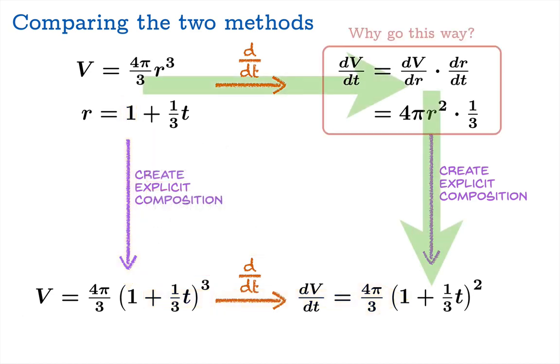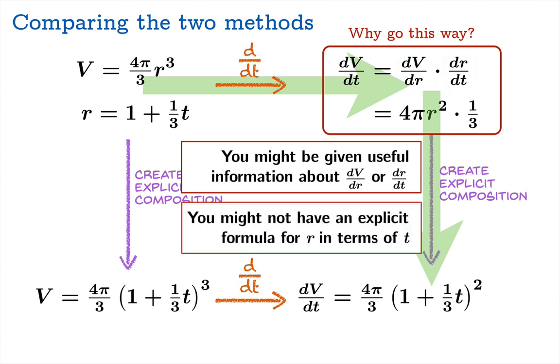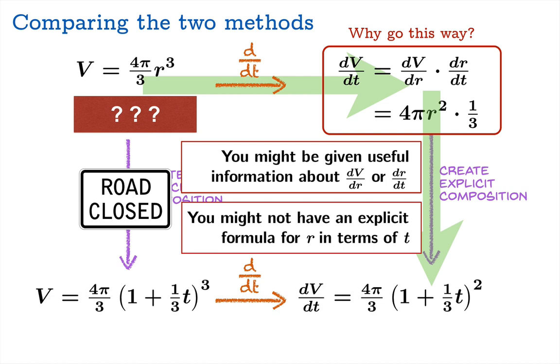So why would you want to go this way? Well, one possibility is you might be given useful information about dv dr or dr dt right off the bat. And if you go this way, you can immediately use that information. Another possibility is that you might not have an explicit formula for r in terms of t. If you don't have access to such a formula, then this route is actually closed to you and you don't even have an option.